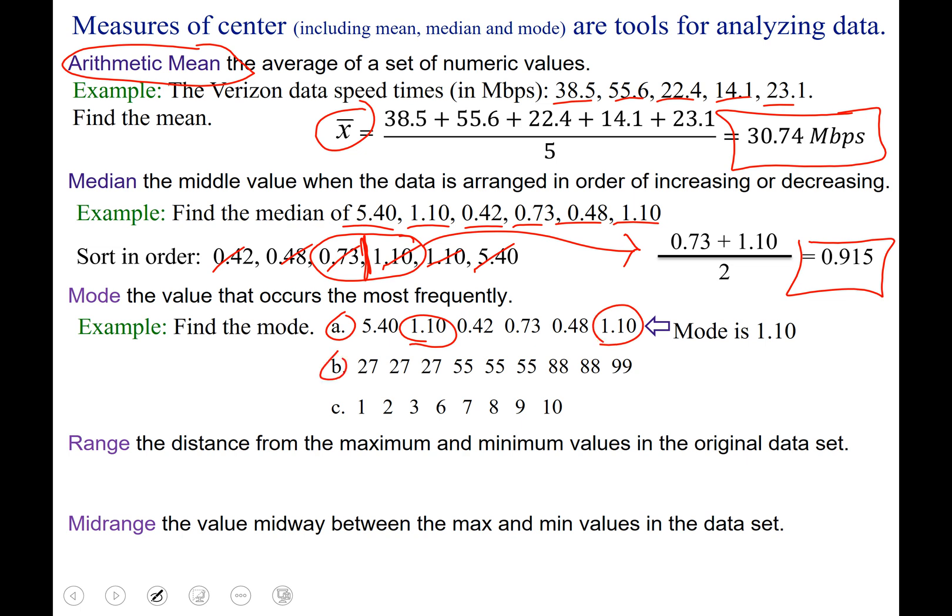Take a look at B now. In B, we have 27 represented three times. 55 is also represented three times. So this is a set of data that we consider bimodal. It has two modes, 27 and 55. And take a look at part C. Looks like everything is represented one time, so there's no data value that's represented more than the others. So it's okay to have no mode.